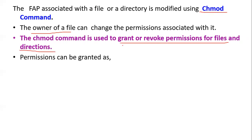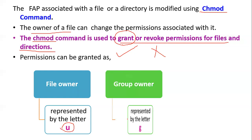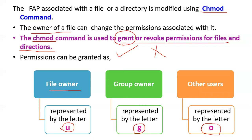Using chmod you can grant or revoke permission. You can revoke the permission — that means you can take back a permission that was previously given. Permission can be granted using the letter u for file owner, g for group owner, and o for other users.